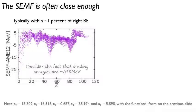And so this deviation is often on the order of a percent. So with this just hand-wavy model, you get within a percent of the correct binding energy.